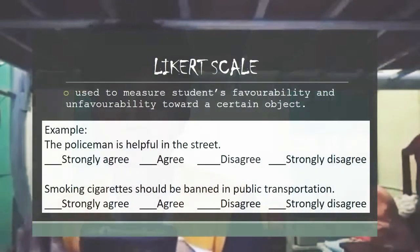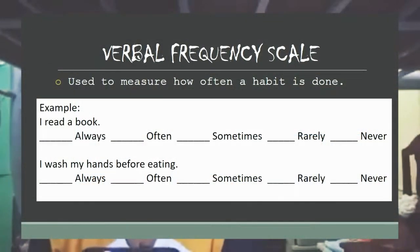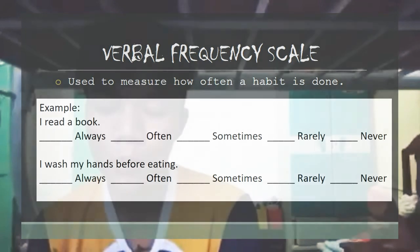Scales have two types: the Likert scale and the verbal frequency scale. The Likert scale is used to measure students' favorability or unfavorability toward a certain object or scenario — it determines whether a student is in favor or not of a given situation. The verbal frequency scale is used to measure how often a habit or activity is done.